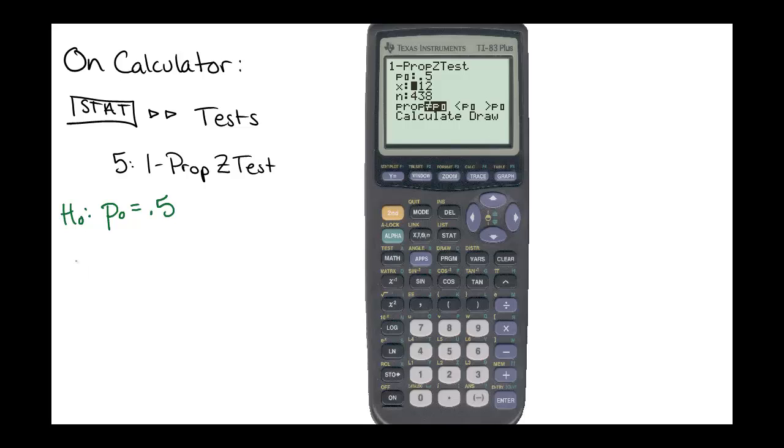And then we have the information about the sample that we had. In this case, our x value was 531, our n was 1,003. That was how many adults out of the total of 1003 were concerned about identity theft. So we have 531, 1003. And then this last piece is what was the alternative hypothesis. So our alternative hypothesis was that p was greater than 0.5. So in this case, we're going to choose the option that says greater than p0, our p0, in this case was that 0.5. So we select greater than p0, then move down to calculate.